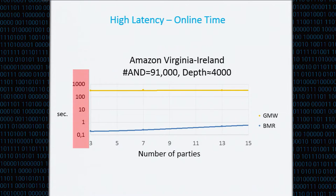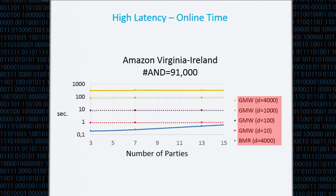Because the difference was so big, we also tested on shallower circuits — fake circuits with the same number of AND gates but varying depth. We see that even for a depth-10 circuit, for the online time alone, our protocol still performs better. Recall that our protocol has only two rounds in the online phase.